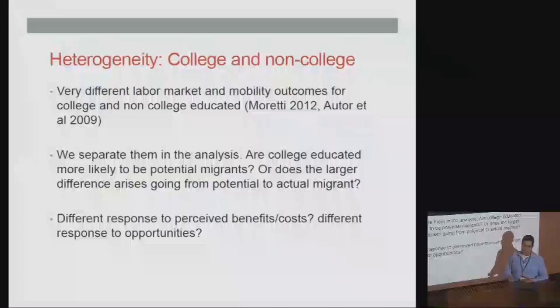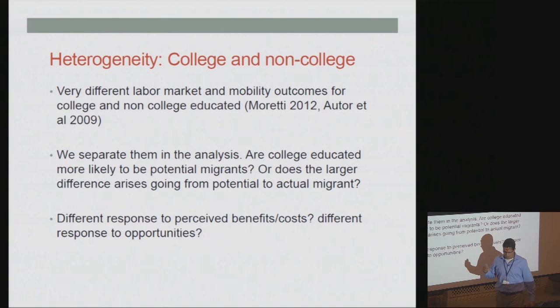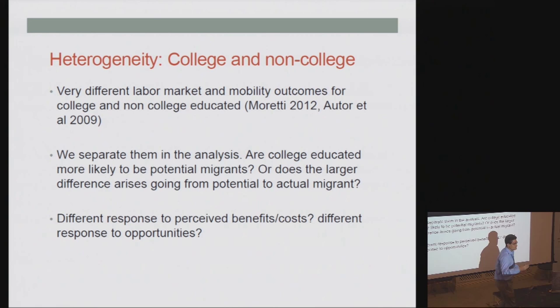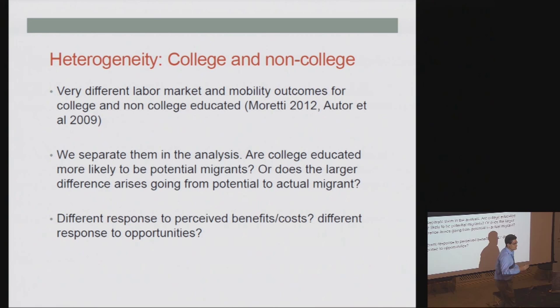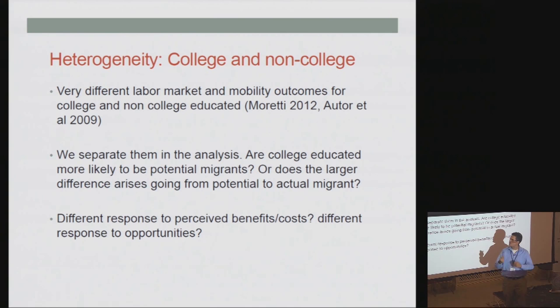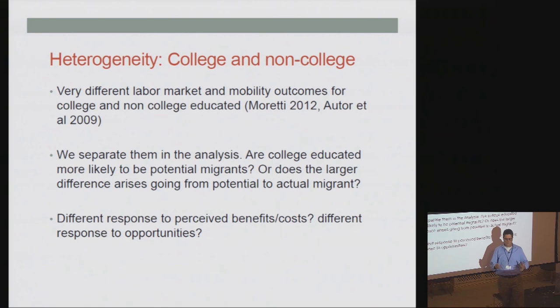People are very heterogeneous, and one dimension we cannot ignore — which has become prominent in the labour literature — is that college-educated and non-college-educated have massively different behaviour in labour markets, migration, and mobility. In our analysis we consider these as two separate groups and analyze for each what determines their potential and actual migration behaviour.